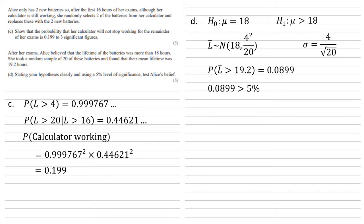This is larger than the 5% level of significance. Hence, it's not unlikely enough to change anything. So it's not significant, and we say there's insufficient evidence to support Alice's claim.